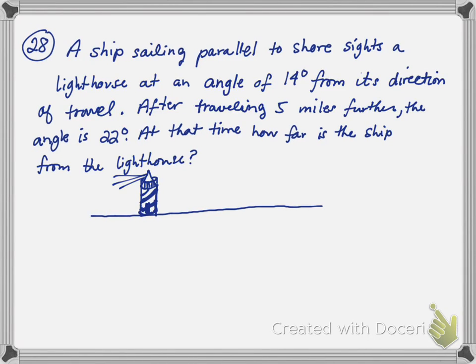This is number 28 of the Trig Final Exam Review. A ship sailing parallel to the shore sights a lighthouse at an angle of 14 degrees from its direction of travel.